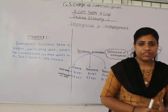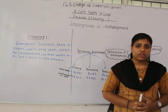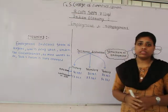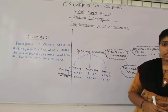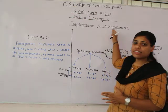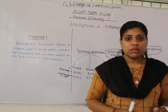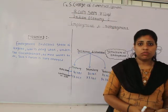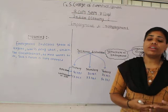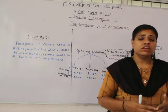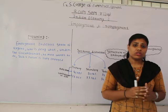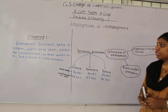In the third unit, we have completed our first chapter, that is population. Now we are dealing with our second chapter, that is employment and unemployment. Under this chapter, we are going to see the meaning of employment, then structure of employment in India, then the meaning of unemployment, various types of unemployment, causes of unemployment in India, the remedies to solve the problem of unemployment, and then the government measures taken to remove the problem of unemployment in the Indian economy. So let's begin with the meaning of employment.